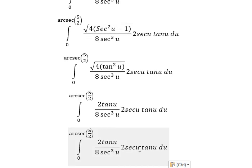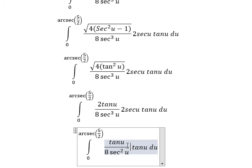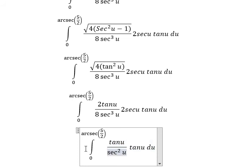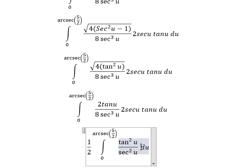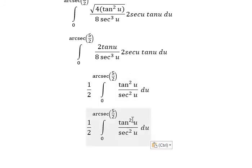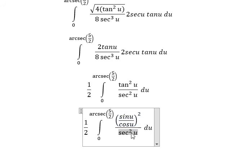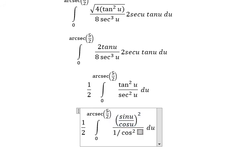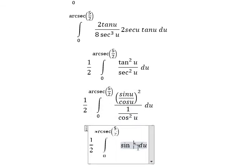We simplify sec(u) with sec(u), and 2 with 2, leaving one-half. Then tan(u) with tan(u) gives tan²(u). We know tan²(u) equals sin²(u)/cos²(u), and sec²(u) equals 1/cos²(u). After simplifying, we get sin²(u).